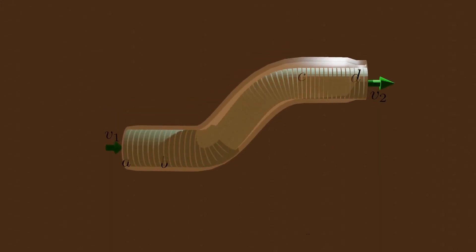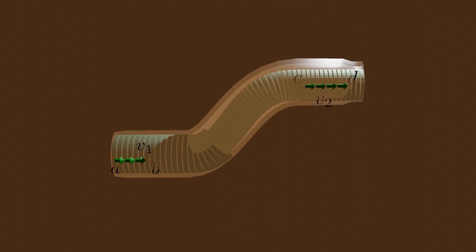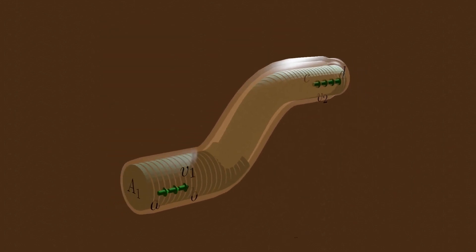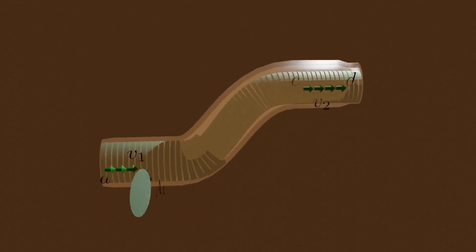Let's consider the element of fluid that at some initial time lies between the two cross sections A and C. The speeds at the lower and upper ends are V1 and V2. A1 and A2 are the cross-section areas of the tube at points A and C.